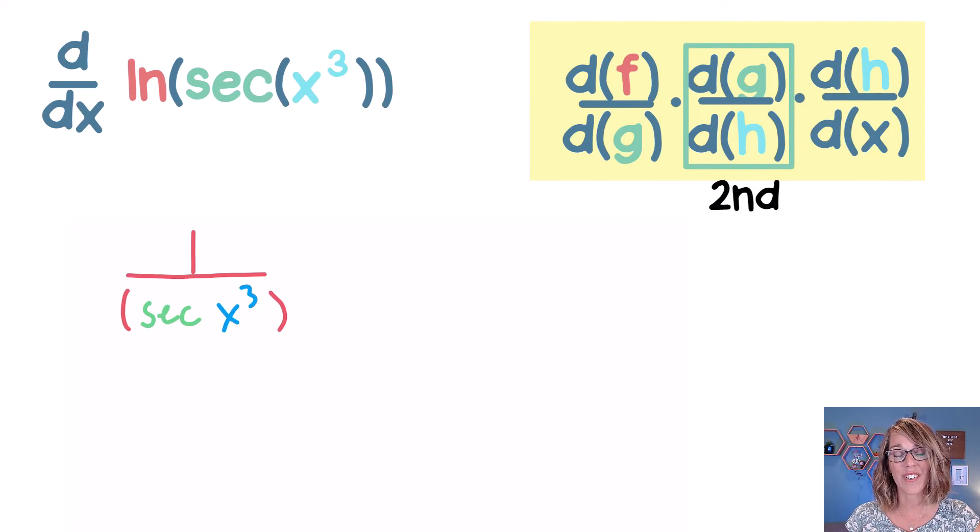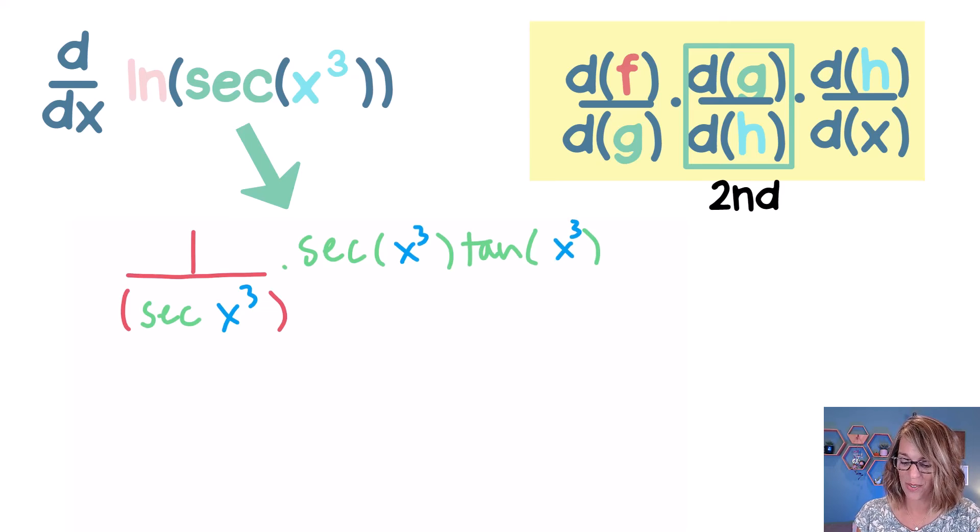Multiplying that now times the derivative of g with respect to h. I'm done with the natural log. I can cover that up. I'm going to go ahead and multiply now by the derivative of secant. The derivative of secant is secant tangent. And this is with respect to that innermost function. With respect to means I'm holding it, I'm not changing it. So I get an x cubed inside of that derivative for secant.